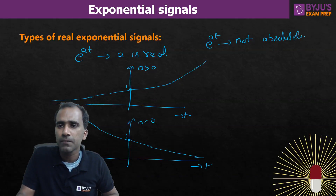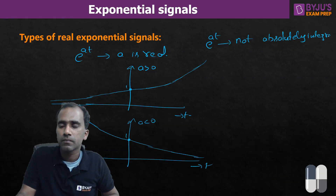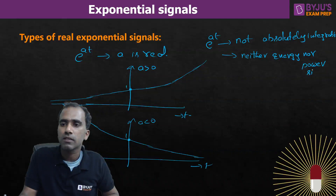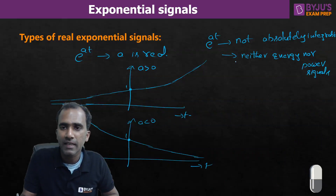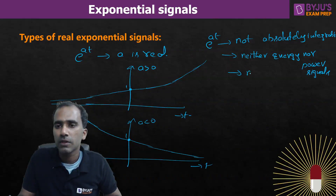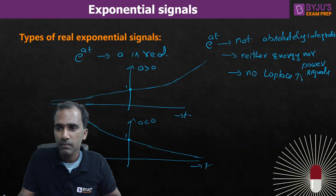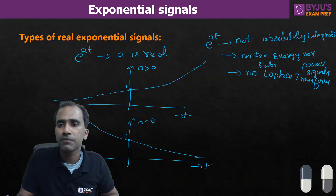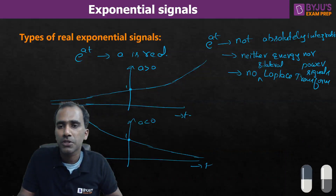These signals — e^(at) for both positive and negative 'a' — are not absolutely integrable, and they are neither energy signals nor power signals. Regarding Laplace transform: you might recall from mathematics that e^(at) has a Laplace transform, but that is the unilateral Laplace transform. The bilateral Laplace transform does not exist for real exponential signals of this form.